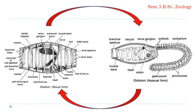Along with that, Doliolum also exhibits polymorphism. In the gregaria phase, it develops different kinds of zooids — you have gastrozoid or trophozooid, phorozoid, and gonozooid — so the same organism exists at the same time in different forms, which is known as polymorphism. Doliolum is unique in exhibiting both polymorphism and alternation of generation. For the exam, you can expect a question regarding alternation of generation in Doliolum, and you may have to draw a diagram or flowchart. Refer to the book and make a note on that.